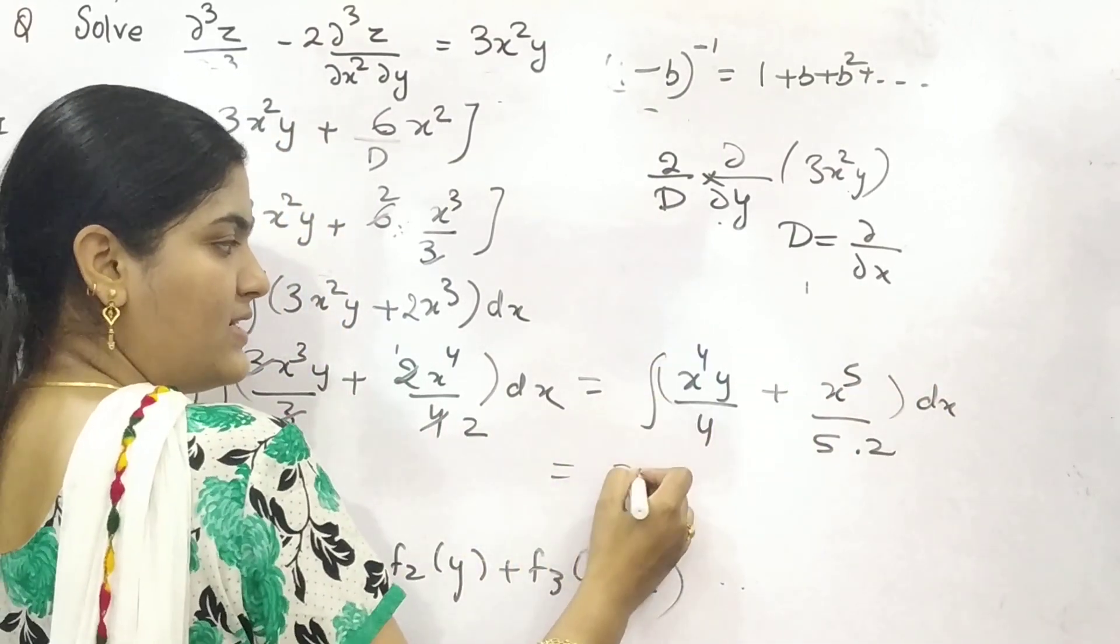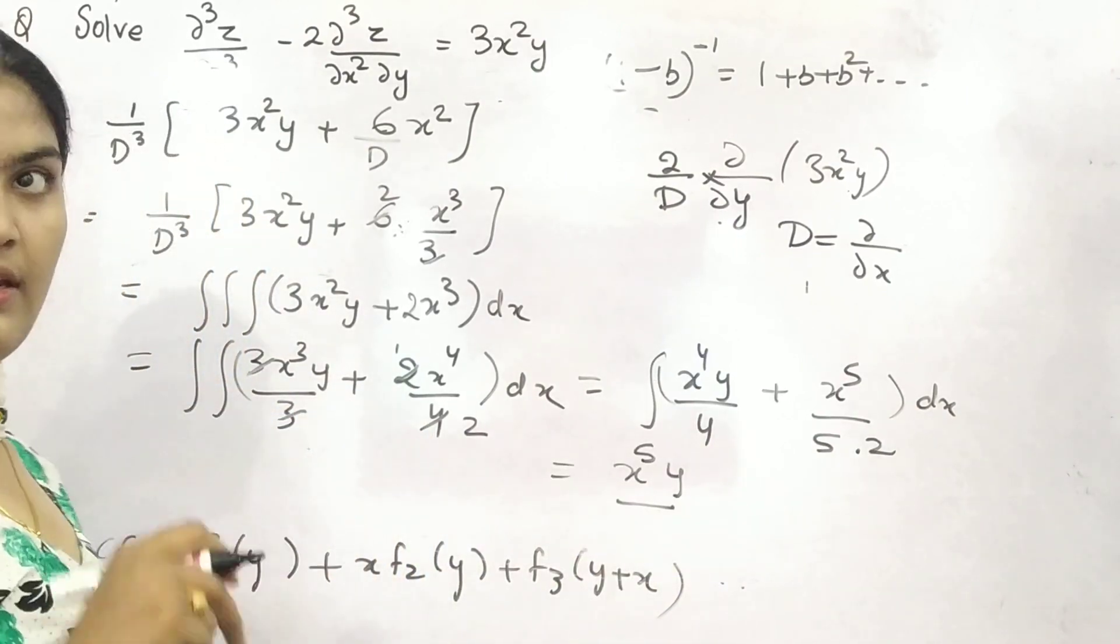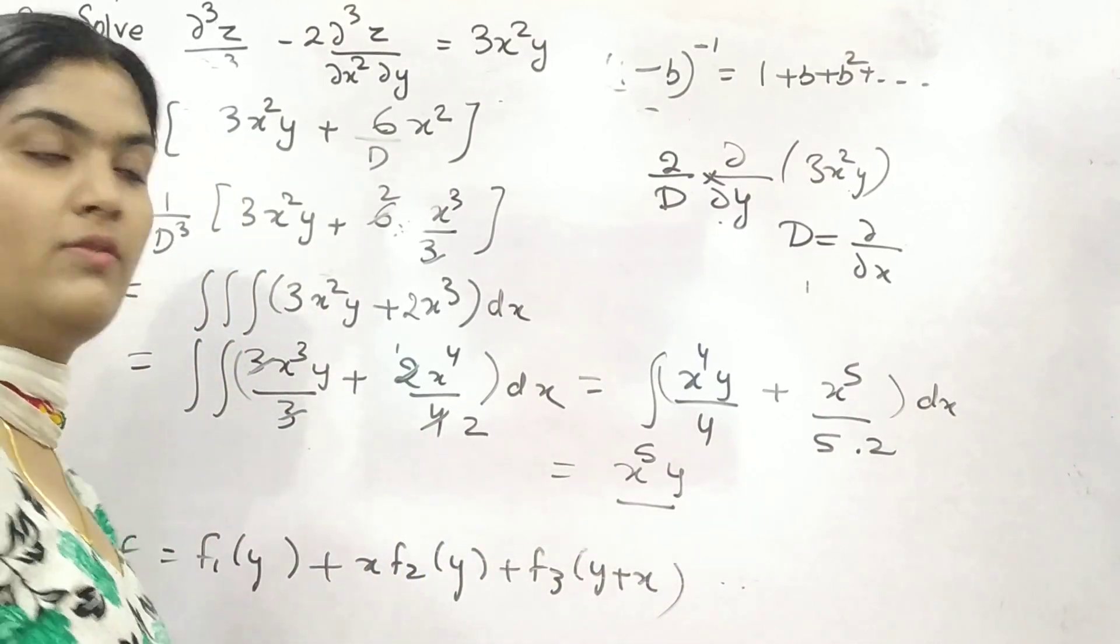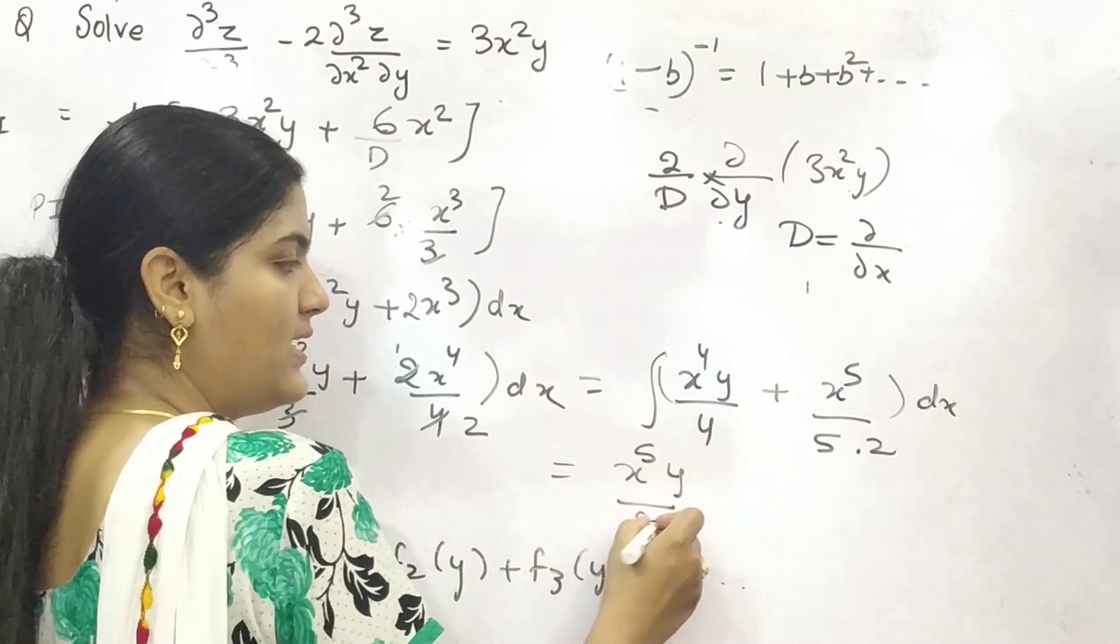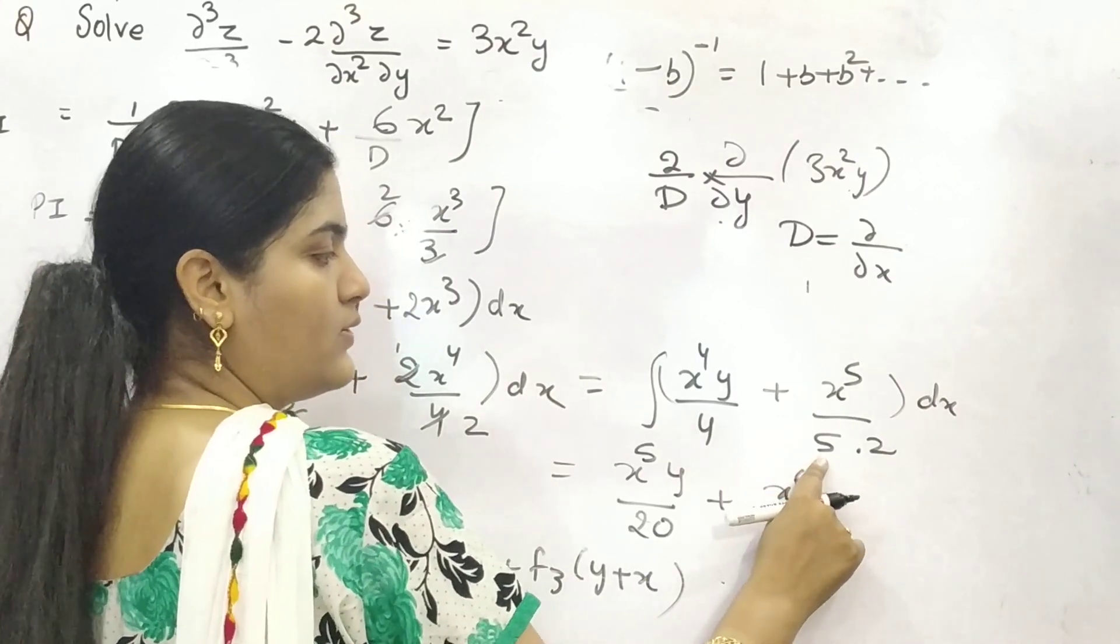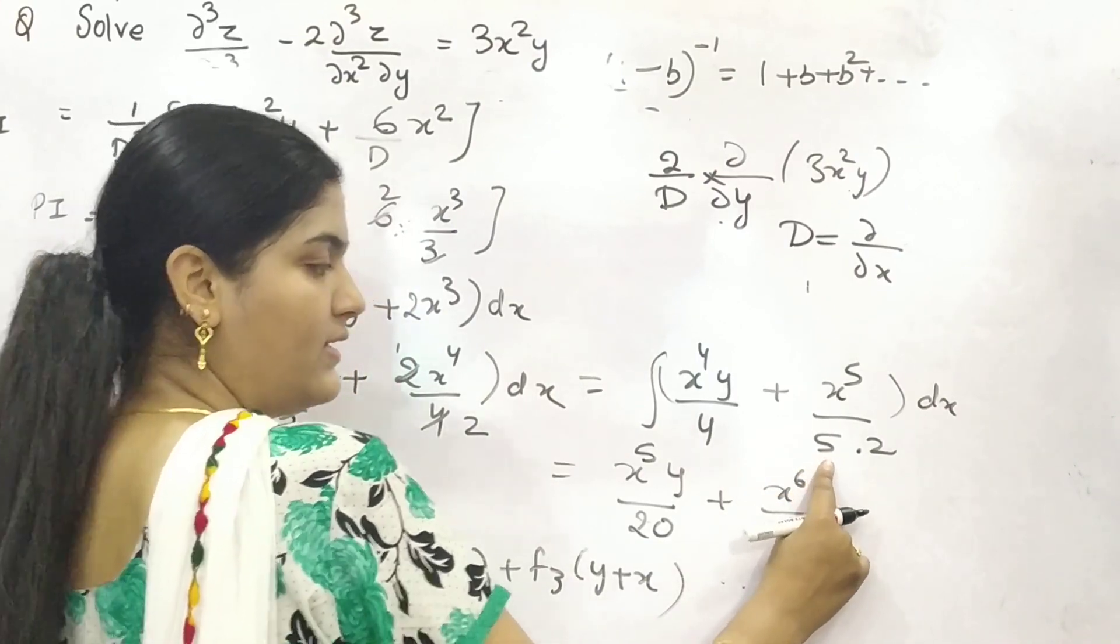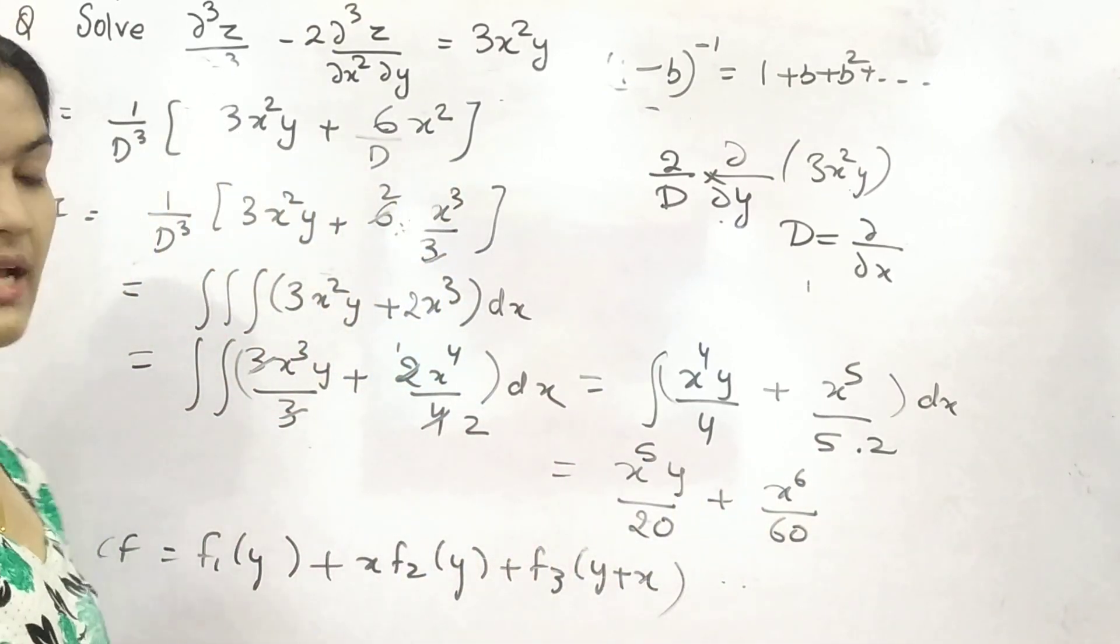Thereafter, x⁵. You are taking integration. You are doing integration with respect to x. So, x⁵/5. So, 5 times 4 is 20. x⁶/6. So, 6 times 5 is 30 times 2 is 60. So, this is your particular integral.